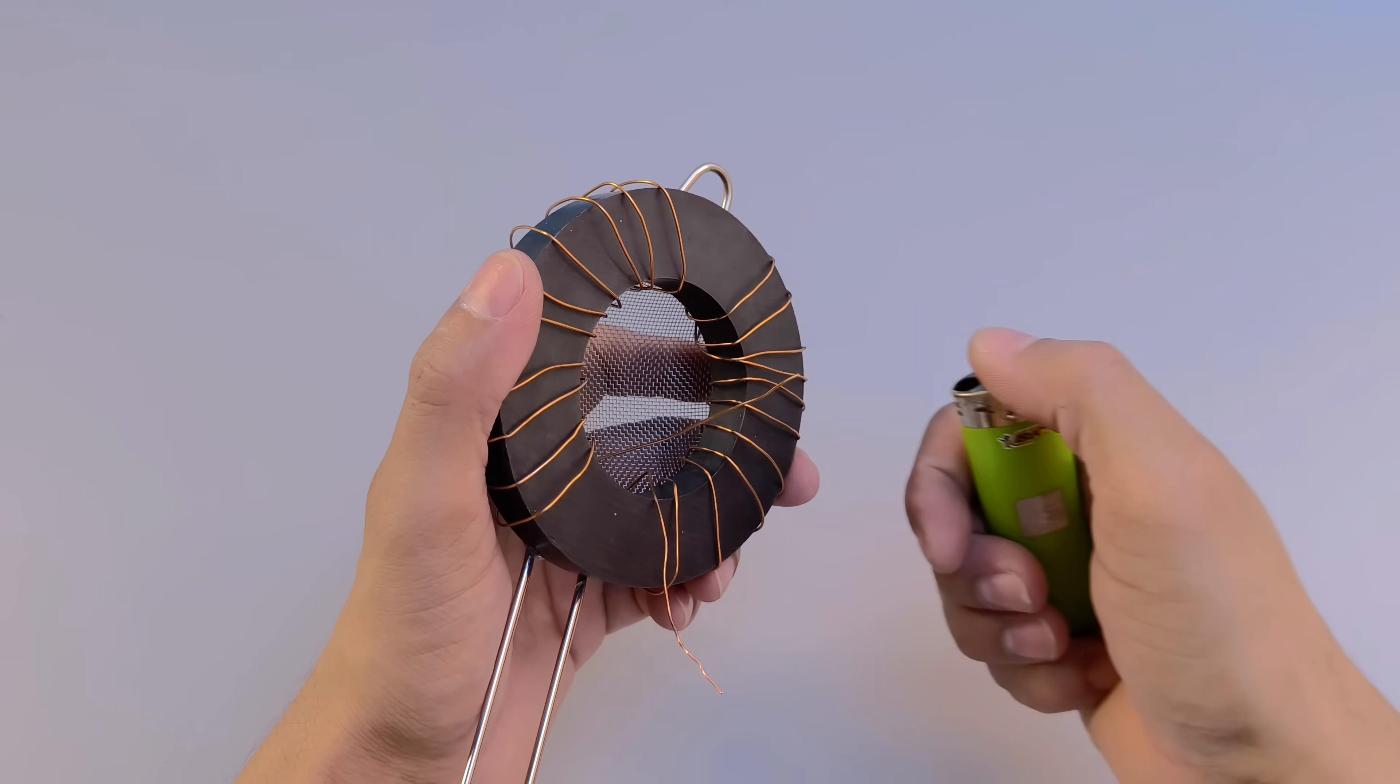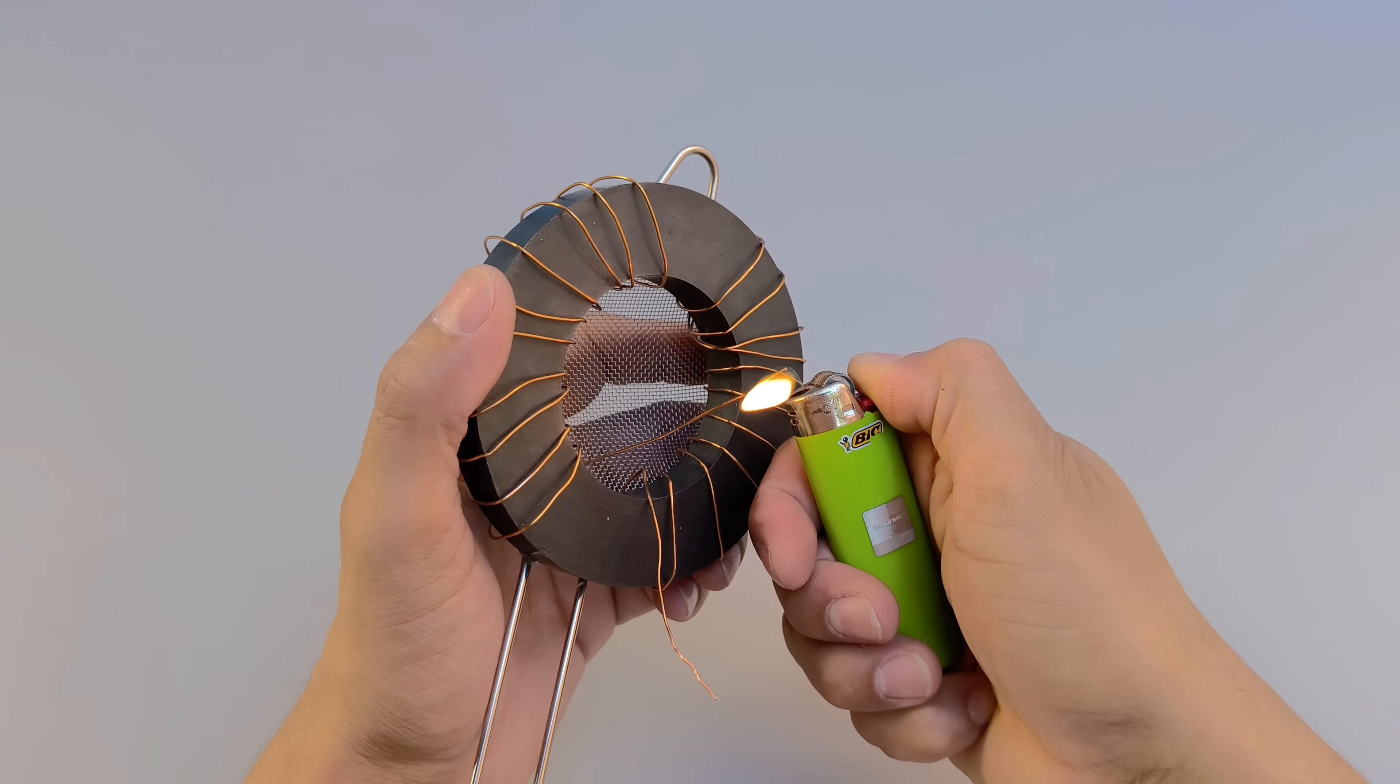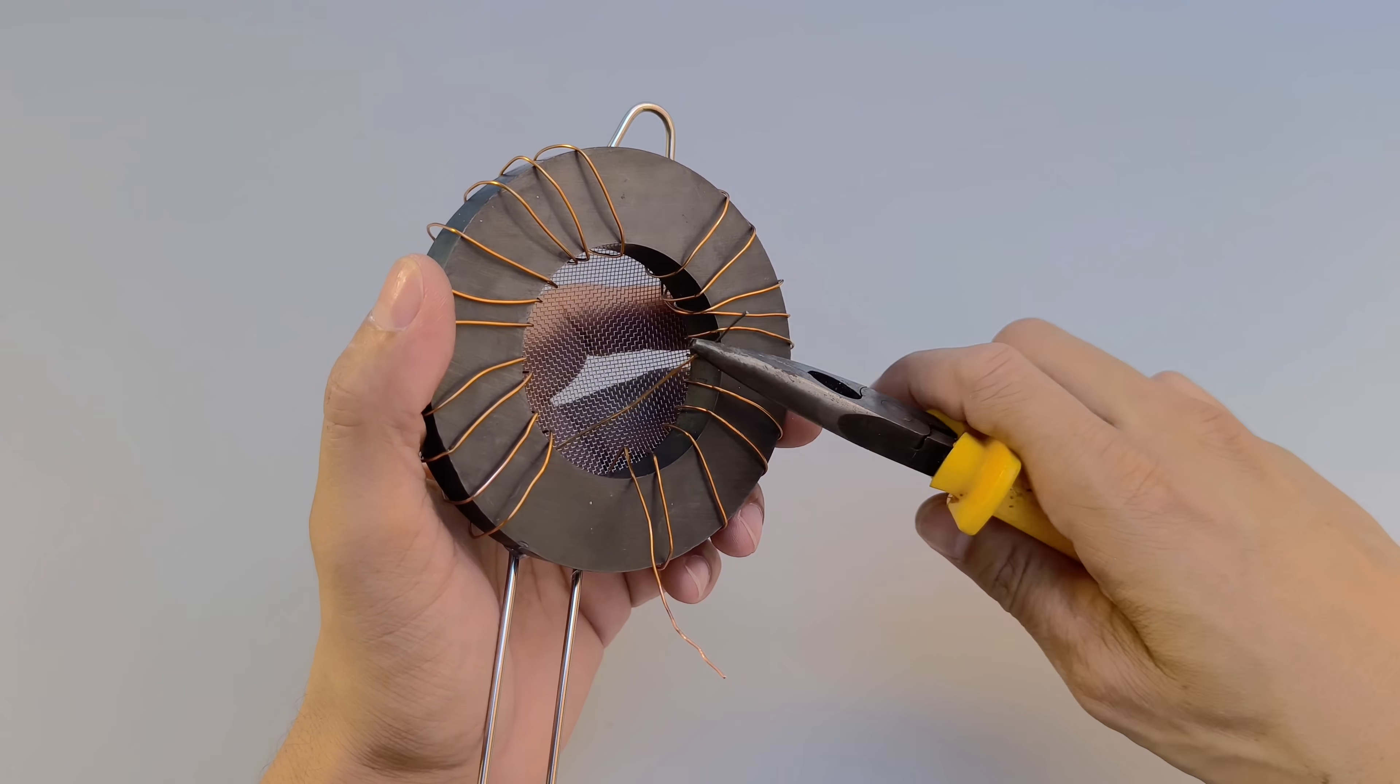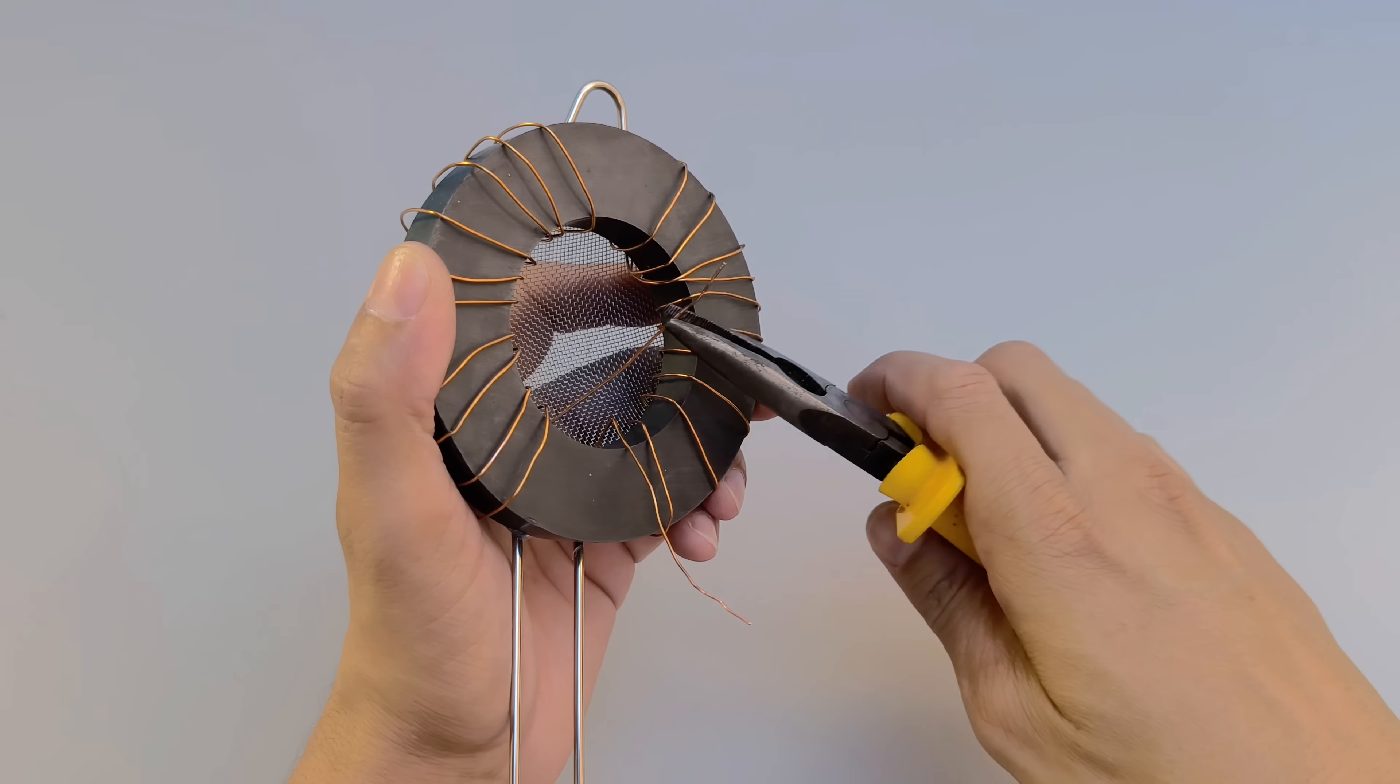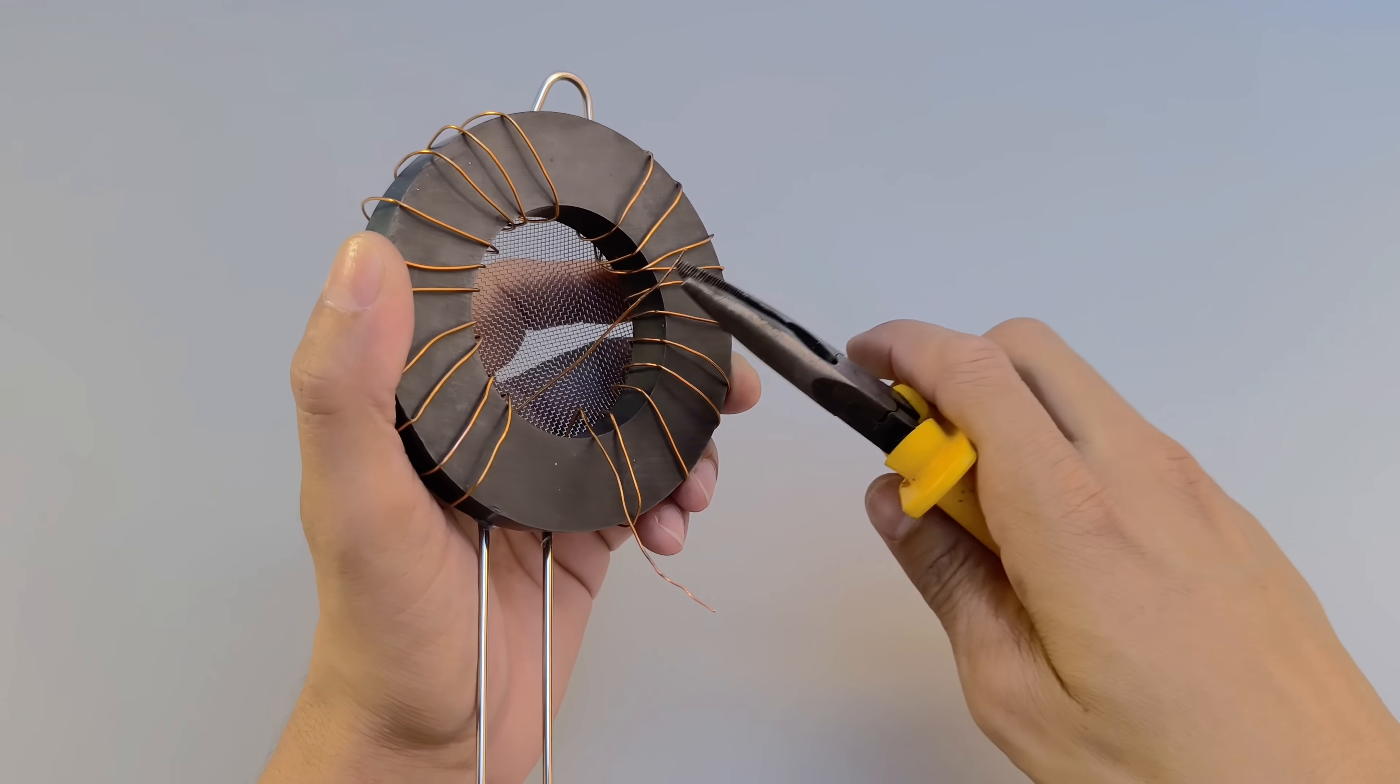Once all the turns are complete, it's time to prepare the ends of the enameled copper wire for electrical connection. To do this, heat the ends of the wire with a lighter or soldering iron, removing the protective layer of enamel. This will ensure good electrical conduction when you connect the device to the other parts of the project.